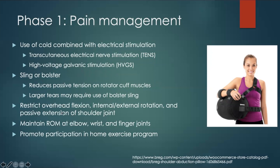The first phase of the rehabilitation process focuses on pain management. This phase uses physical agent modalities such as cold and electrical stimulation to reduce pain and decrease swelling in the initial phase of the healing process. A sling or a bolster is used during this time to protect the repair, reduce tension on the muscles, and prevent any damage to the muscle tissue. Larger tears may require the use of a bolster sling, like the one shown in this picture.